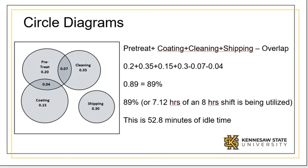We can then determine how much of an 8-hour shift is truly being used. We find that 89% of a shift, or 7.12 hours, is utilized. This leaves us with 52.8 minutes of idle time. Once we factor in breaks and other factors, we can determine if more tasks can be added.